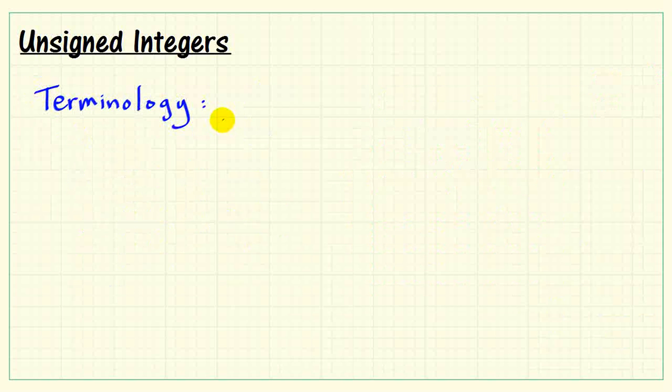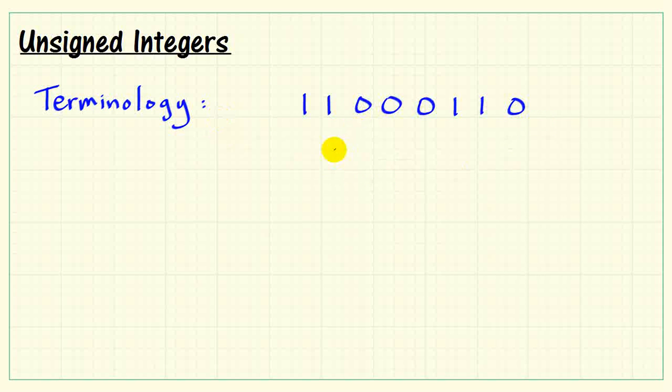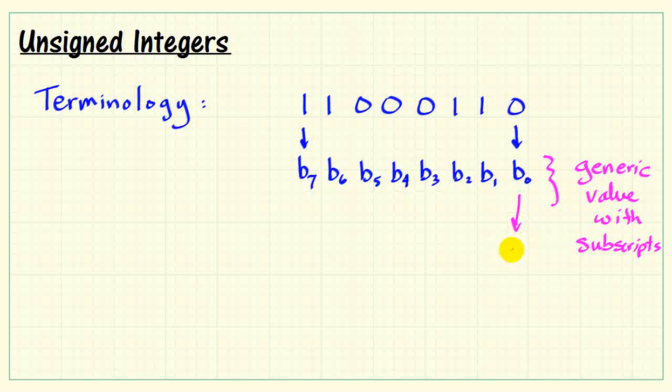Some terminology is helpful at this point. Looking at that same binary pattern, we note the exponent was 0 for the rightmost bit and 7 for the leftmost bit. It's conventional to use those exponents as the subscript values, such as the generic value b.